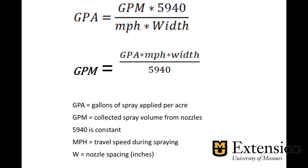To determine gallons per minute, we take our gallons per acre times our speed times our width between our nozzles divided by 5940.